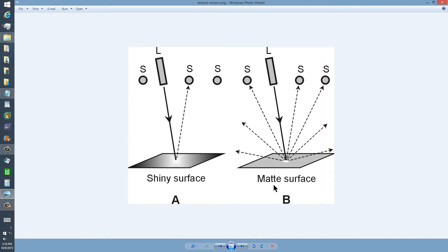How can you tell the difference, or how can a robot tell the difference between a shiny surface and a matte surface? Well, the technique is really rather simple. A laser beam is shone at the surface,